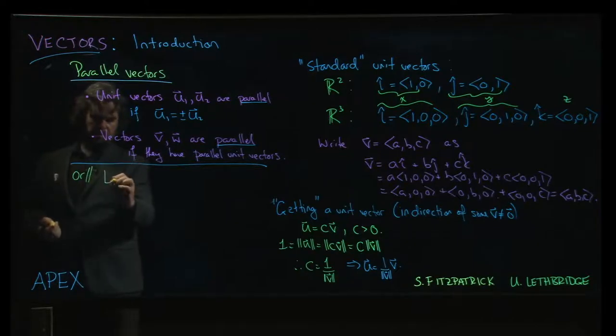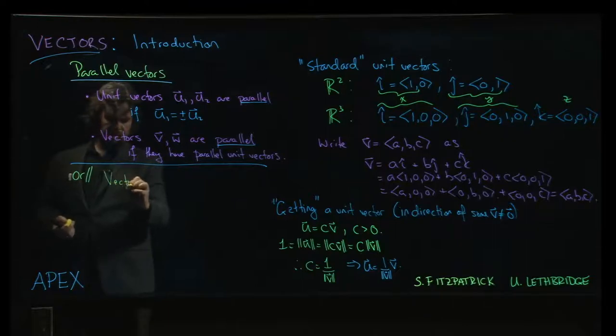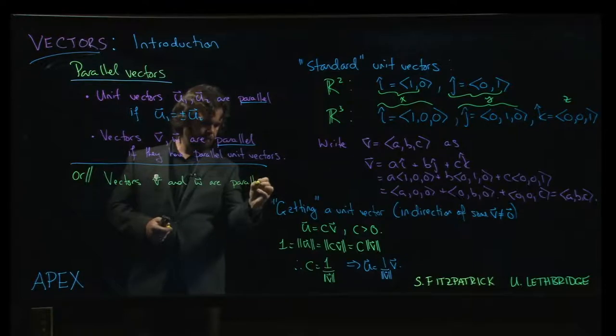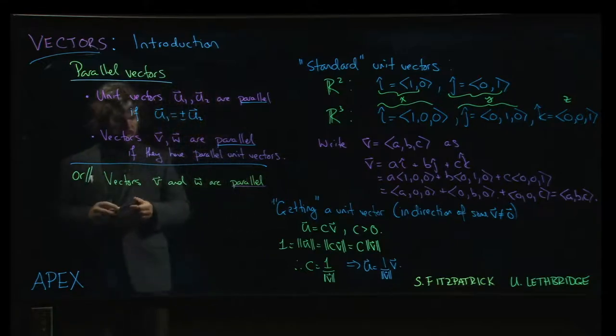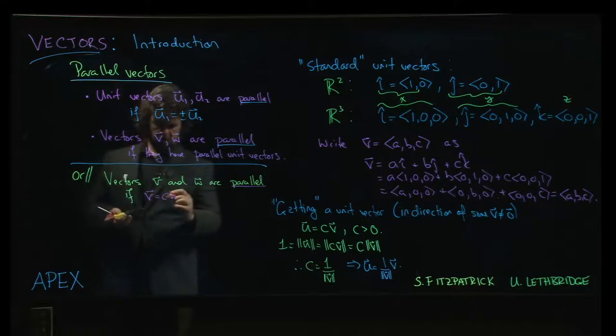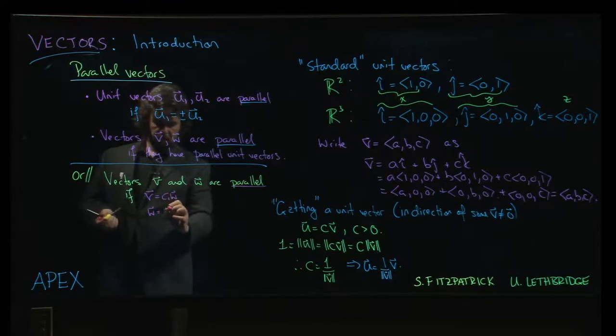So the other way we say it is the vectors v and w are parallel if v is a scalar multiple of w, or it could be the other way around. So let's call them c1 and c2.